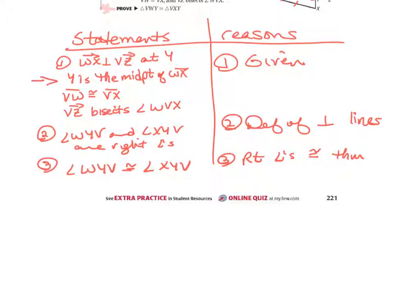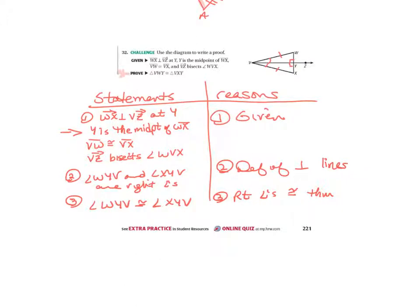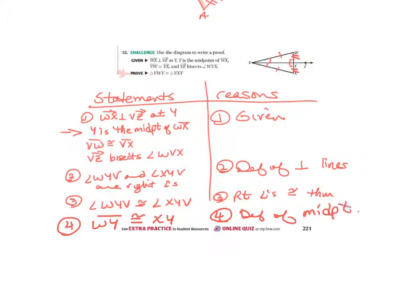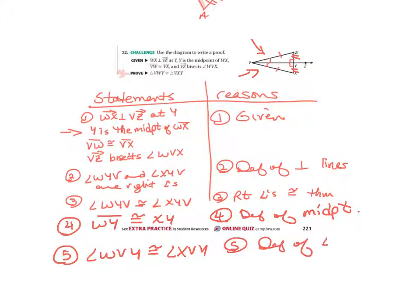Next I bring in the fact that Y is the midpoint, which tells me this segment is congruent to this segment. So statement four: WY is congruent to XY — reason is definition of midpoint. Notice in this proof we're reaching back to chapter one. My next statement brings in the angle bisector: angle W-V-Y is congruent to angle X-V-Y — reason is definition of an angle bisector.